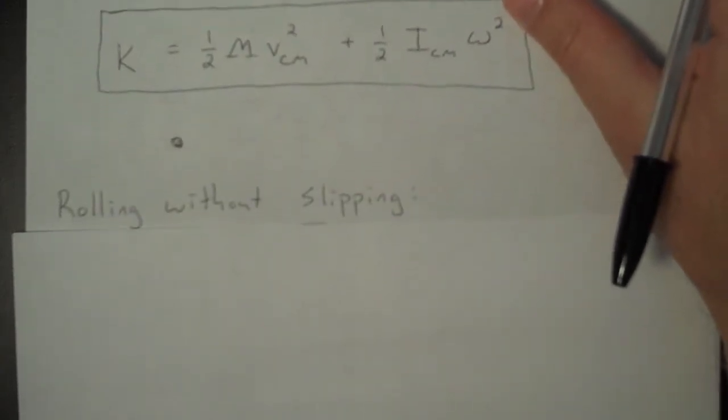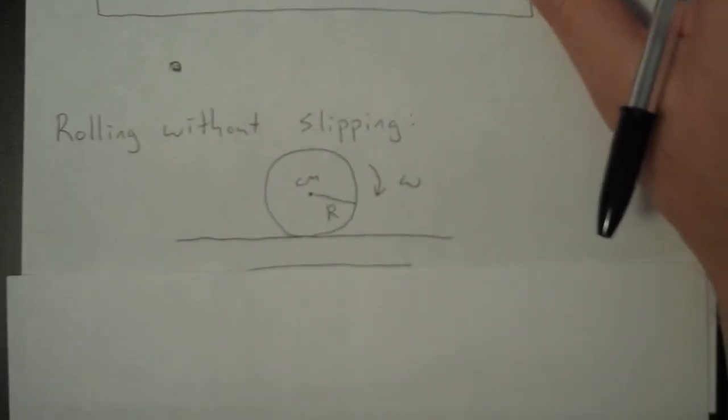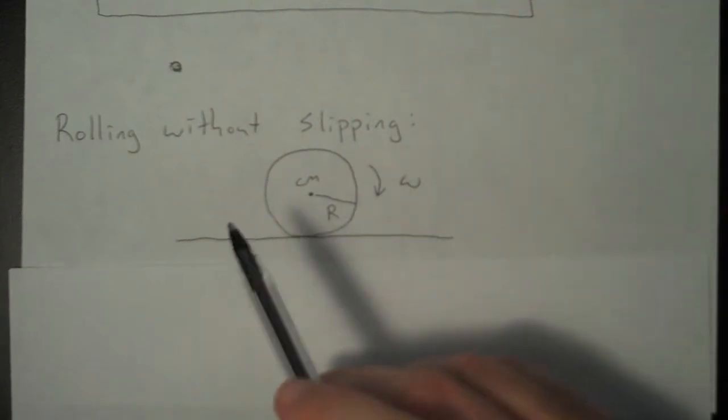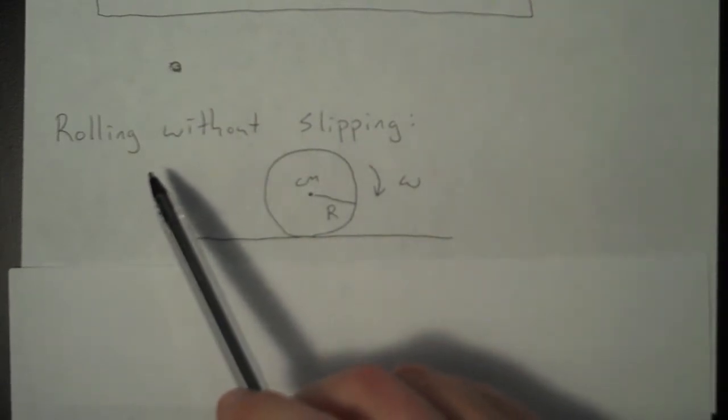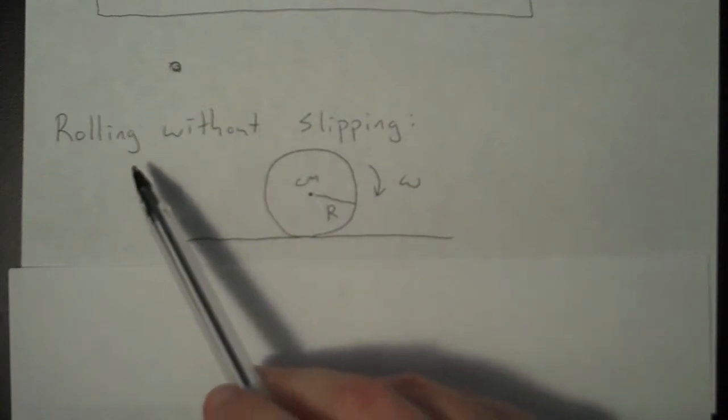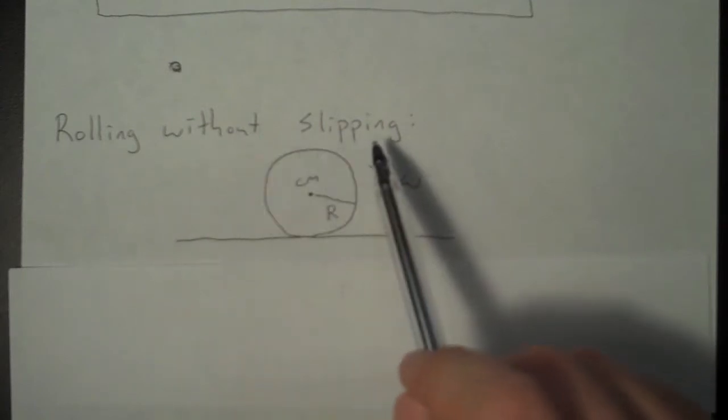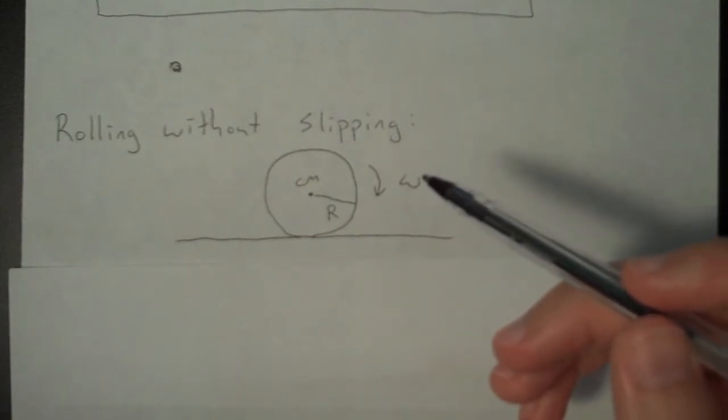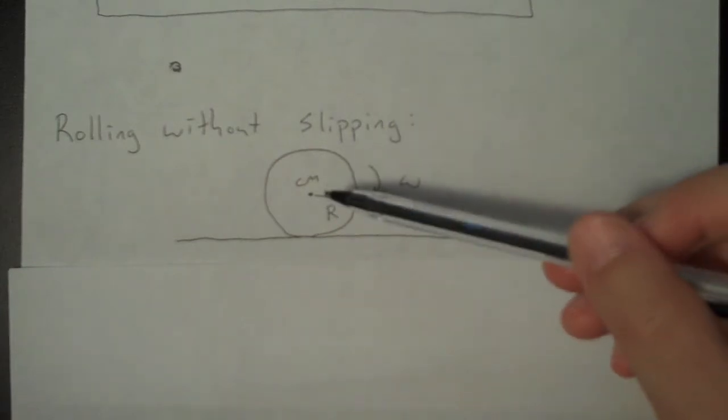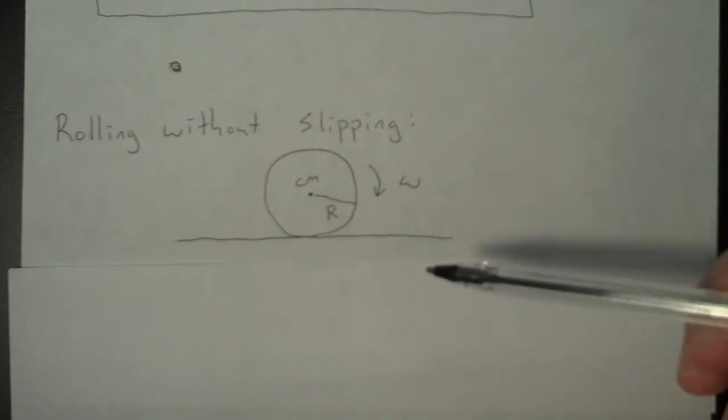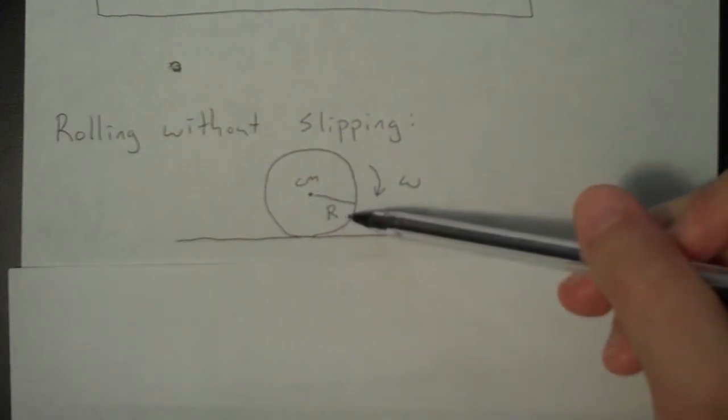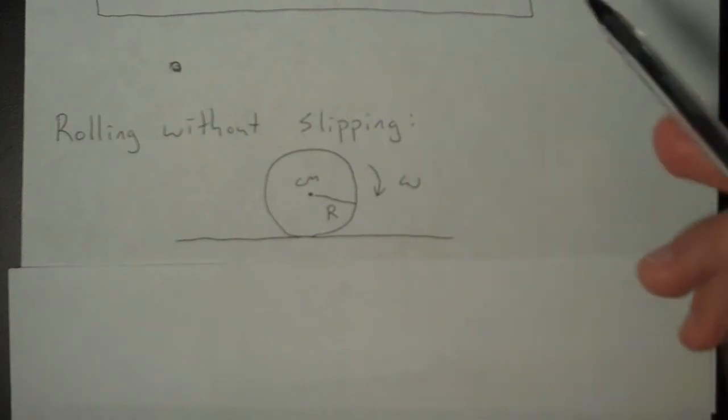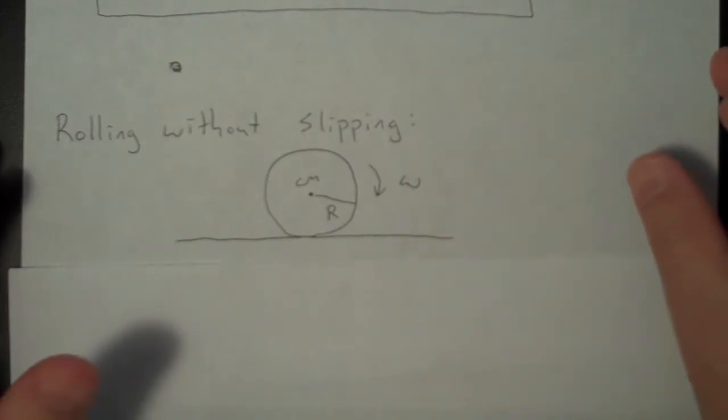Final thing I want to look at before going into our example problem for this lesson. When you are dealing with a wheel, you are dealing with situations where you get rolling without slipping. That's the whole goal of a wheel. You don't want that wheel to slip. And that wheel is rotating about its center of mass. And let's say the wheel has a radius of capital R and it's got an angular speed of omega.